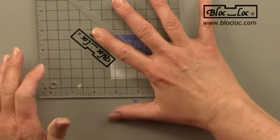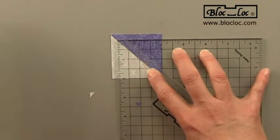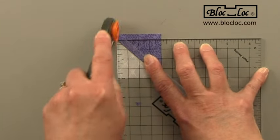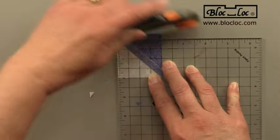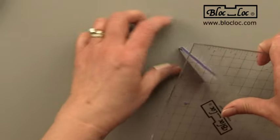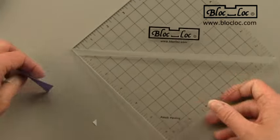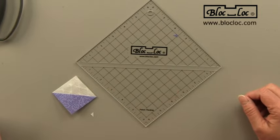Turn the ruler around, slide it back, and finish the cut. And there you go. There's my trimmed half square triangle.